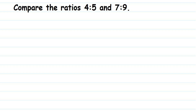Here's a question from ratios: compare the ratios 4 is to 5 and 7 is to 9. Comparing ratios is the same as comparing rational numbers or fractions. There is one easy way and one lengthy way. The easy one is the best one for a one-mark question, so I'm going to explain the easiest way first.